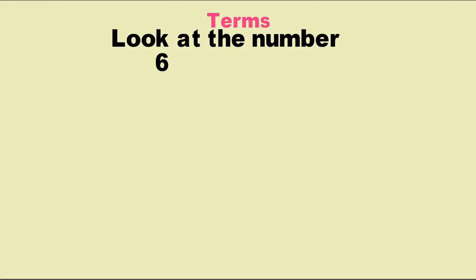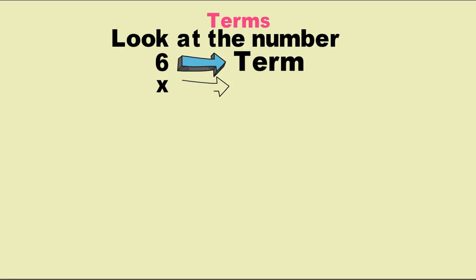Look at the number 6. What is this? Number 6 is a term — this is a term. Now look at the variable x. What is variable x? Variable x is a term. One term is 6 and one term is variable x. This is a single term.